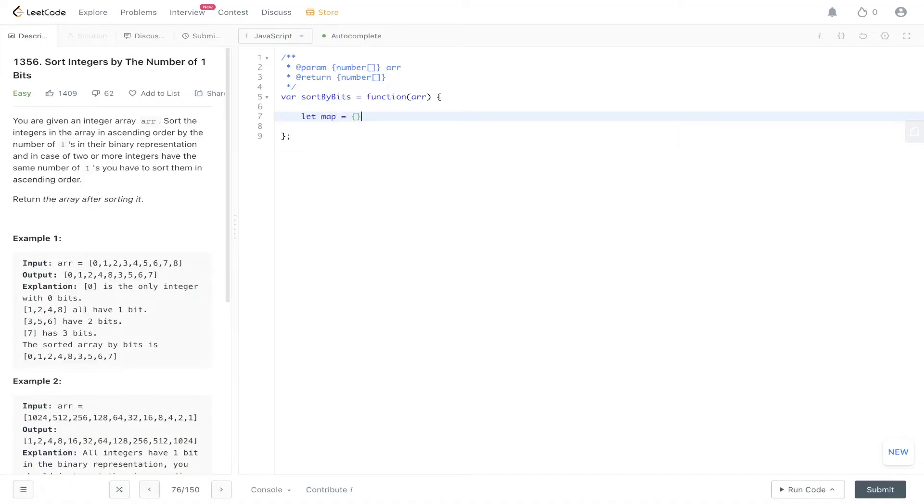Let's initialize our map, which will be an empty object. We're going to loop through the array. So for let a of arr, we're going to work out the count of each value within the array. We're going to use the helper function, numberOfOnes, passing in a.